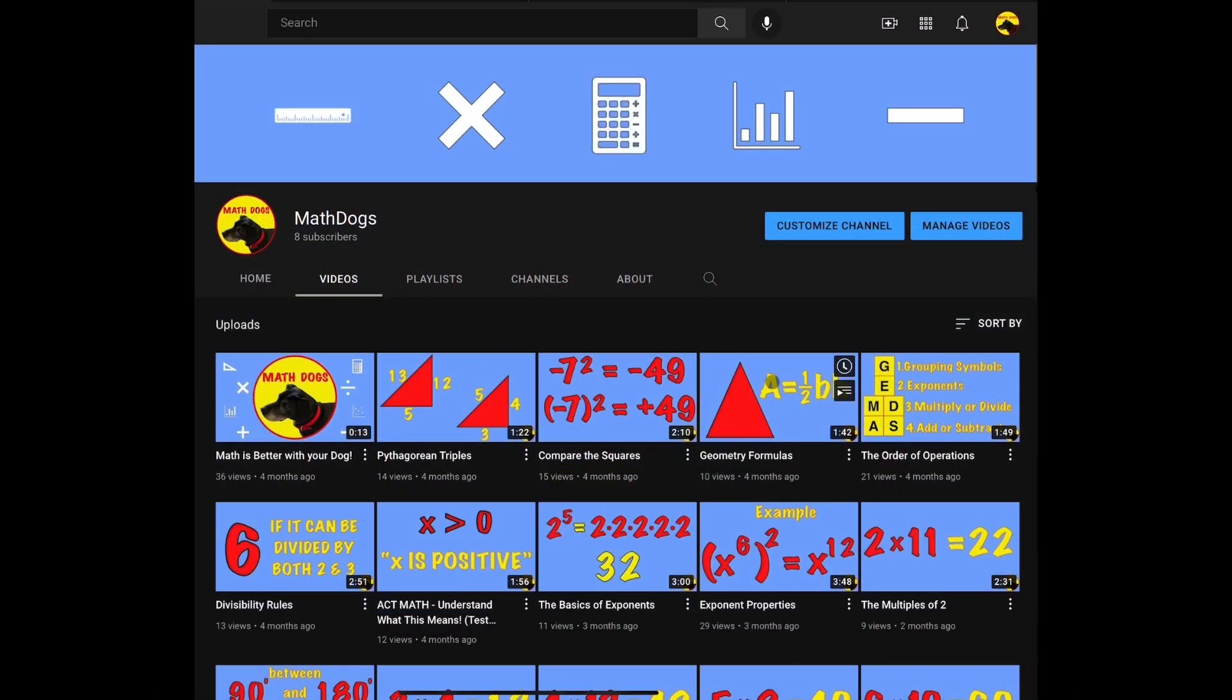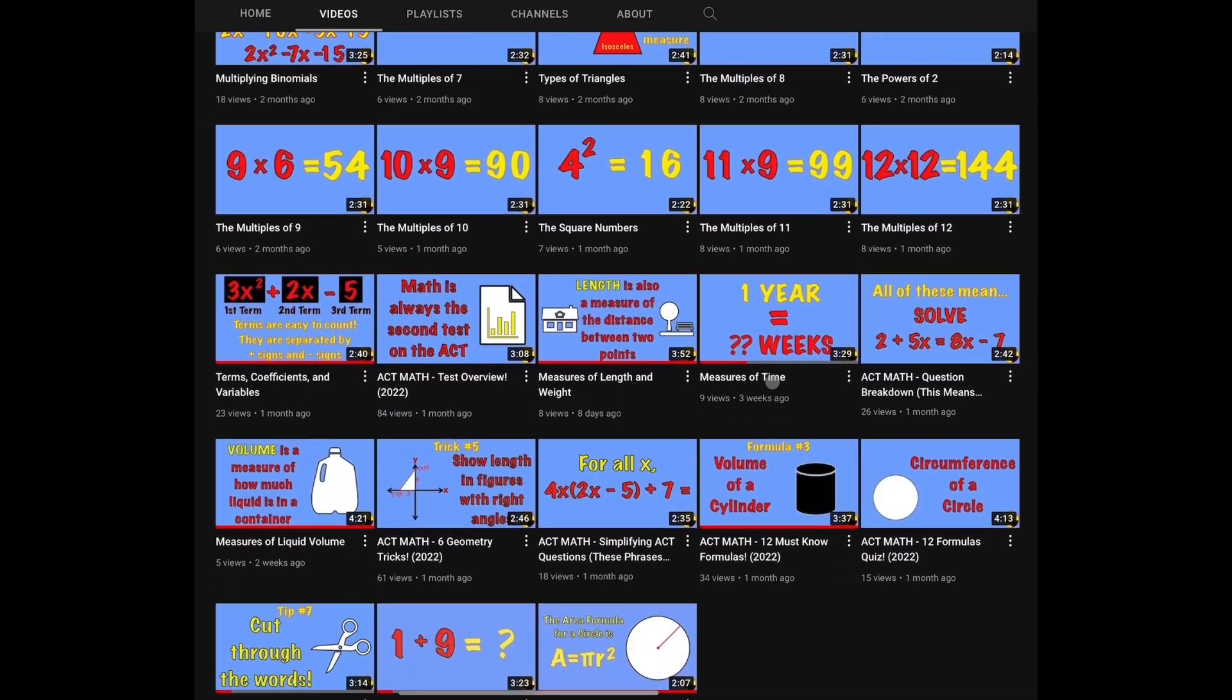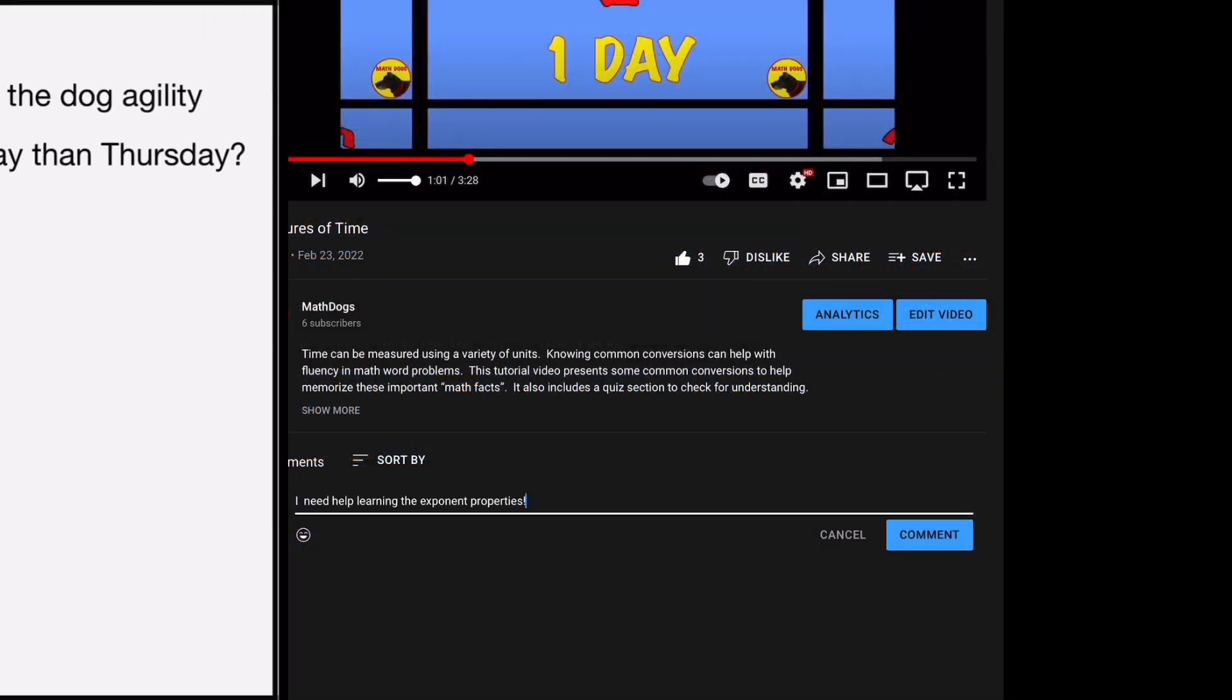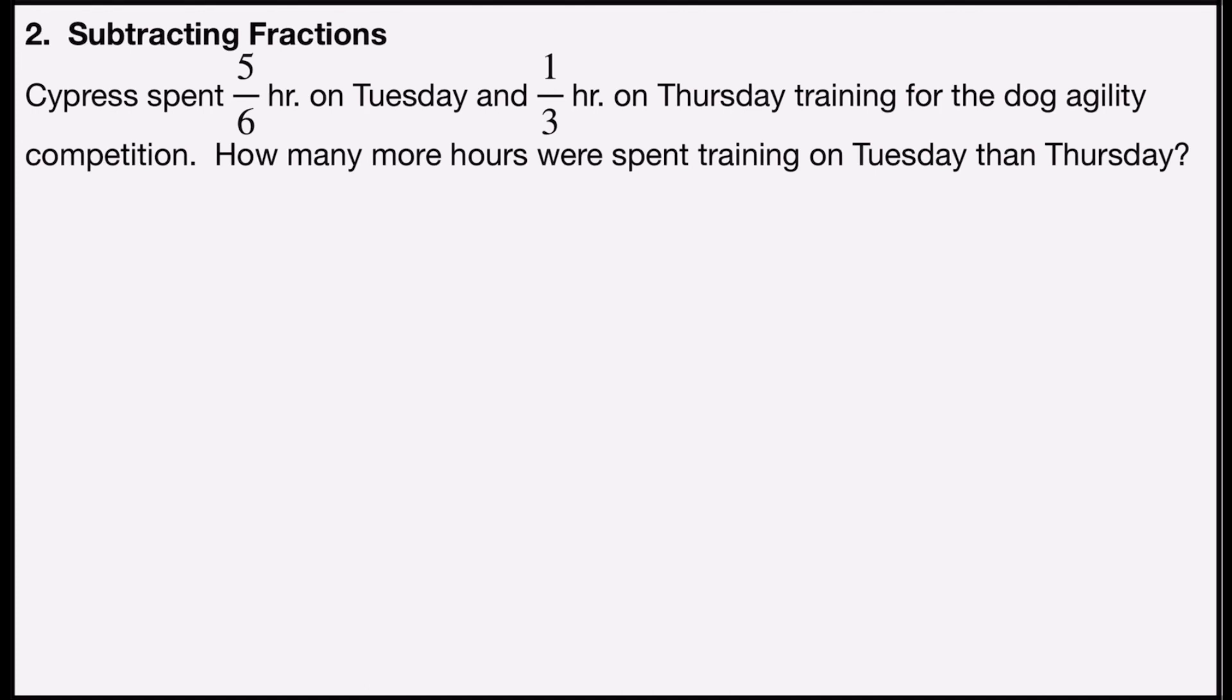Welcome back to Math Dogs. If you're new to the channel, please comment, like, and subscribe. If you have any questions, please comment down below. Problem number two is subtracting fractions. It says Cypress spent 5/6 hours on Tuesday and 1/3 hour on Thursday training for the dog agility competition. How many more hours were spent training on Tuesday than on Thursday?